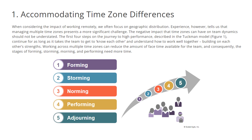The first four steps on the journey to high performance, described in the Tuckman model — as presented in the picture here — continue for as long as it takes the team to get to know each other and understand how to work well together, building on each other's strengths. Working across multiple time zones can reduce the amount of face time available for the team, and consequently the stages of forming, storming, norming, and performing need more time.